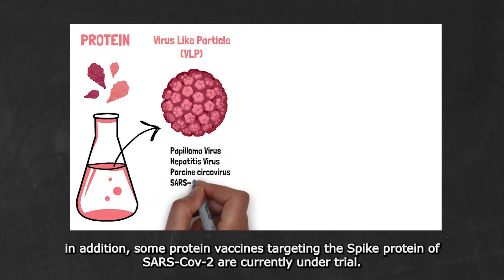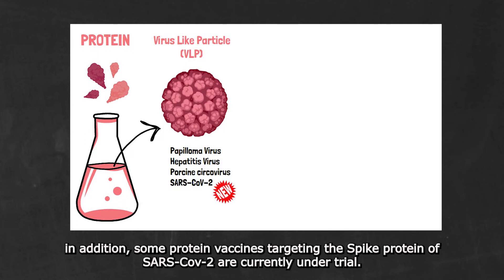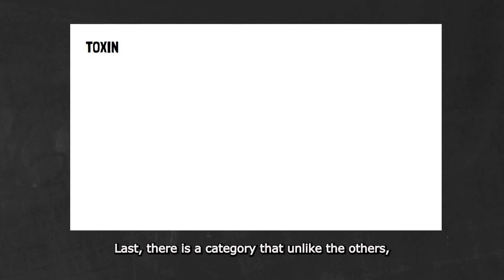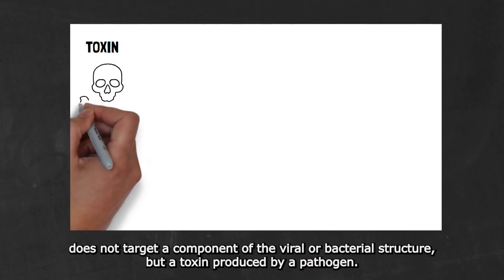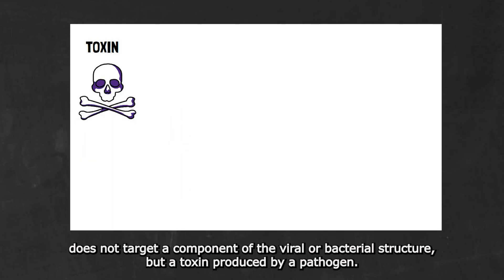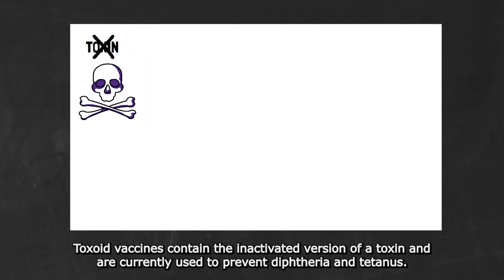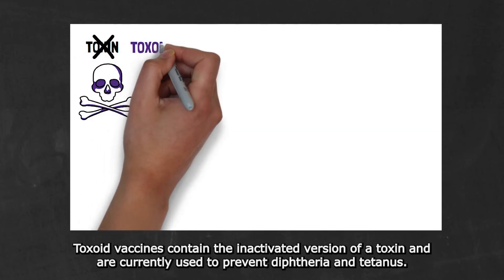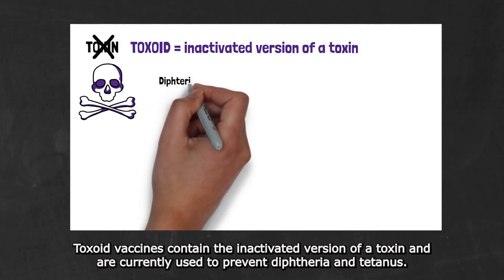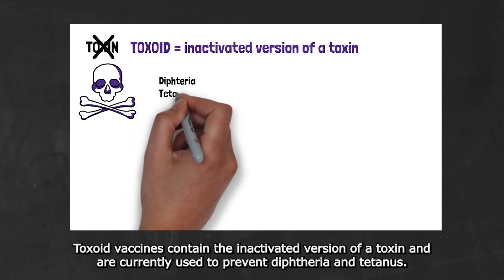In addition, some protein vaccines targeting the spike protein of SARS-CoV-2 are currently under trial. Last, there is a category that, unlike the others, does not target the component of the viral or bacterial structure, but a toxin produced by the pathogen. Toxoid vaccines contain the inactivated version of a toxin and are currently used to prevent diphtheria and tetanus.